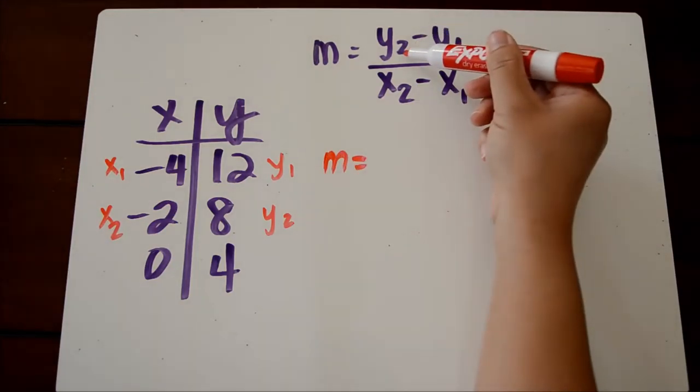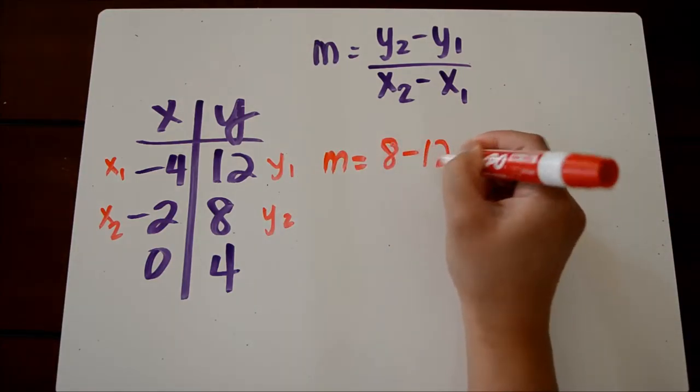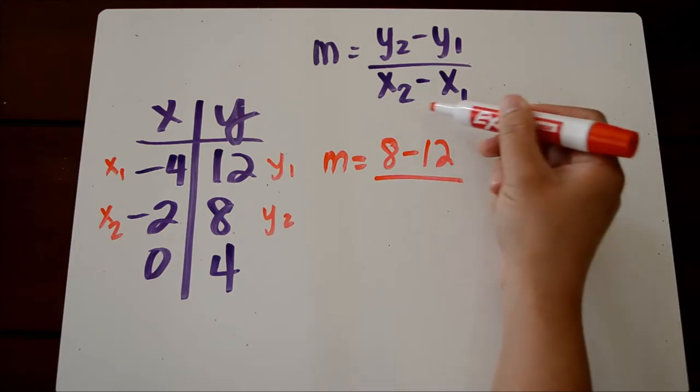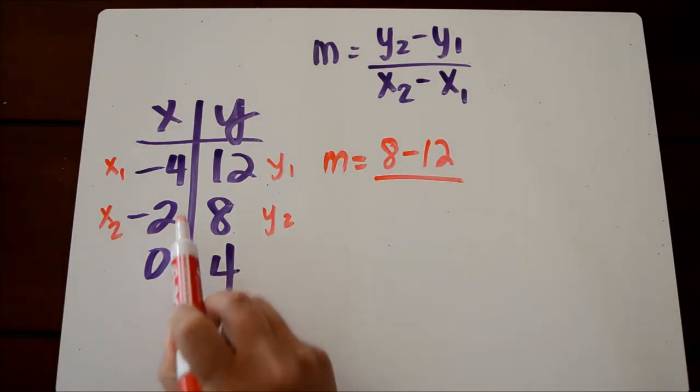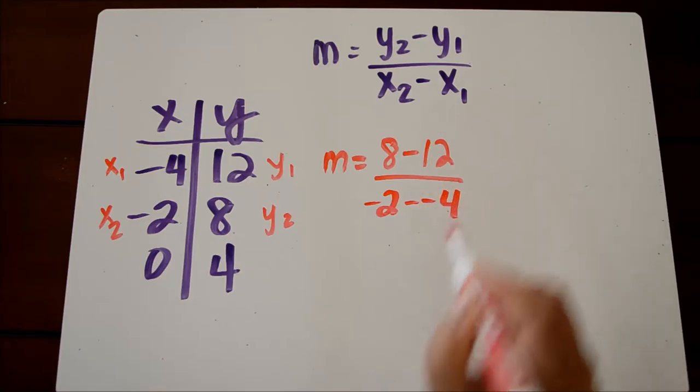So y2 minus y1. Here's our y2, here's our y1. So we're going to write 8 minus 12 over x2 minus x1. That's going to be negative 2 minus negative 4. Remember, when you have minus and negative, it actually becomes plus.